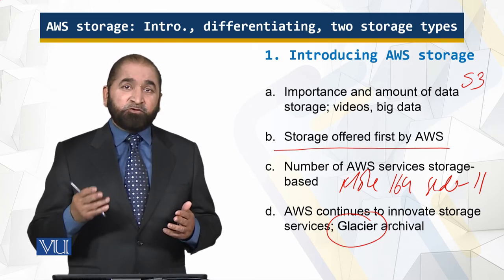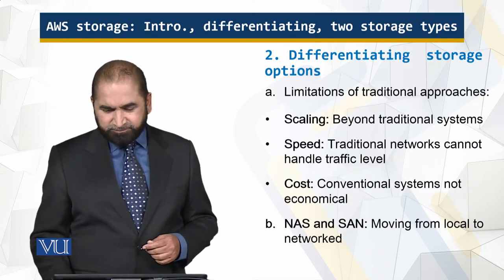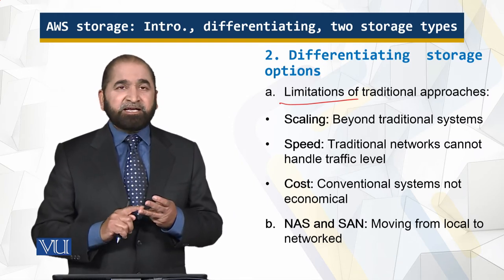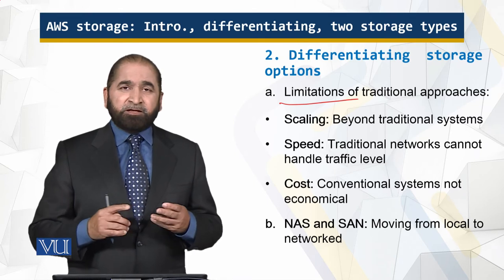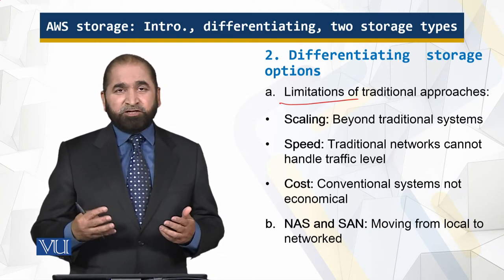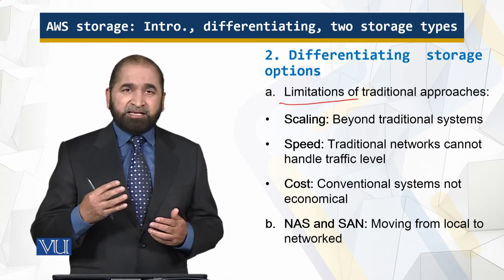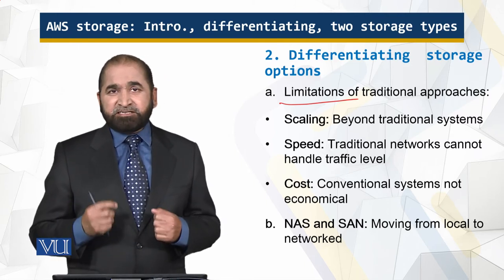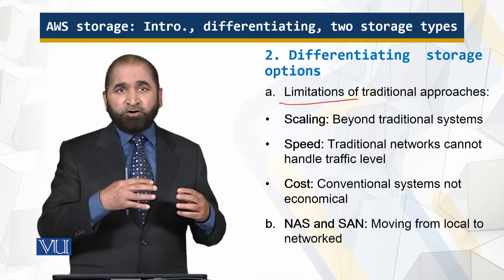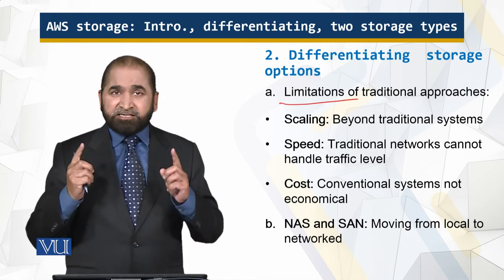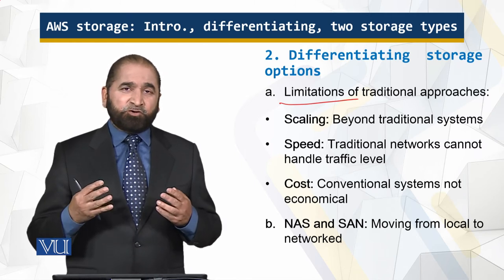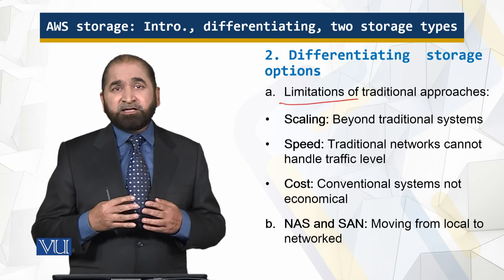Why is AWS storage so popular? There are many limitations of traditional storage services. I'll highlight three: scaling, speed, and cost. Traditional data storage cannot scale as well as what is required today. Then there is speed — if terabytes of data are stored on company servers using the traditional approach, that congests the network. And traditional systems are not cost-effective compared to AWS.